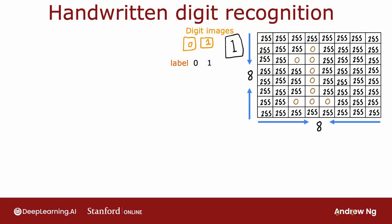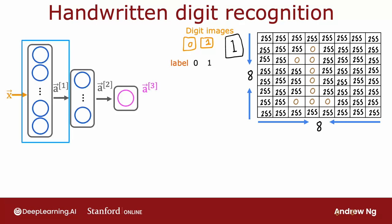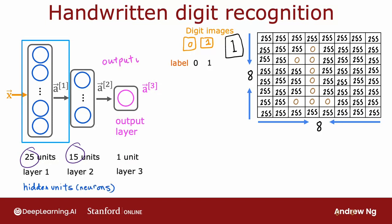Given these 64 input features, we're going to use a neural network with two hidden layers where the first hidden layer has 25 neurons or 25 units. The second hidden layer has 15 neurons or 15 units. And then finally, the output layer outputs what's the chance of this being 1 versus 0.